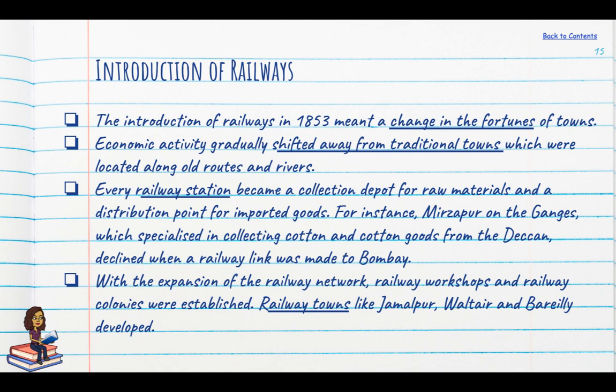Economic activity now gradually shifted away from traditional towns. Every railway station became a collection depot for raw materials and a distribution point for imported goods. Mirzapur on the Ganga, which specialised in collecting cotton from the Deccan, declined when a railway link was made to Bombay. With the expansion of the railway network, railway workshops and colonies were established, and railway towns like Jamalpur, Waltair and Bareilly developed at this time.